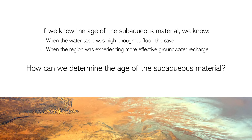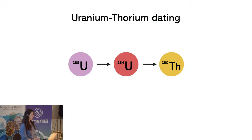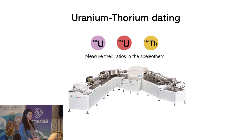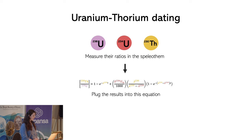How do we determine the age of this material? We use uranium-thorium dating. Uranium-238 decays to uranium-234, which in turn decays to thorium-230. Uranium-238 and uranium-234 are incorporated in the speleothem in trace amounts as it grows and they decay at a known rate. We measure their ratios in the speleothem material using a mass spectrometer — an inductively coupled plasma multi-collector — and then plug the results into an equation to find the age of the subaqueous material.